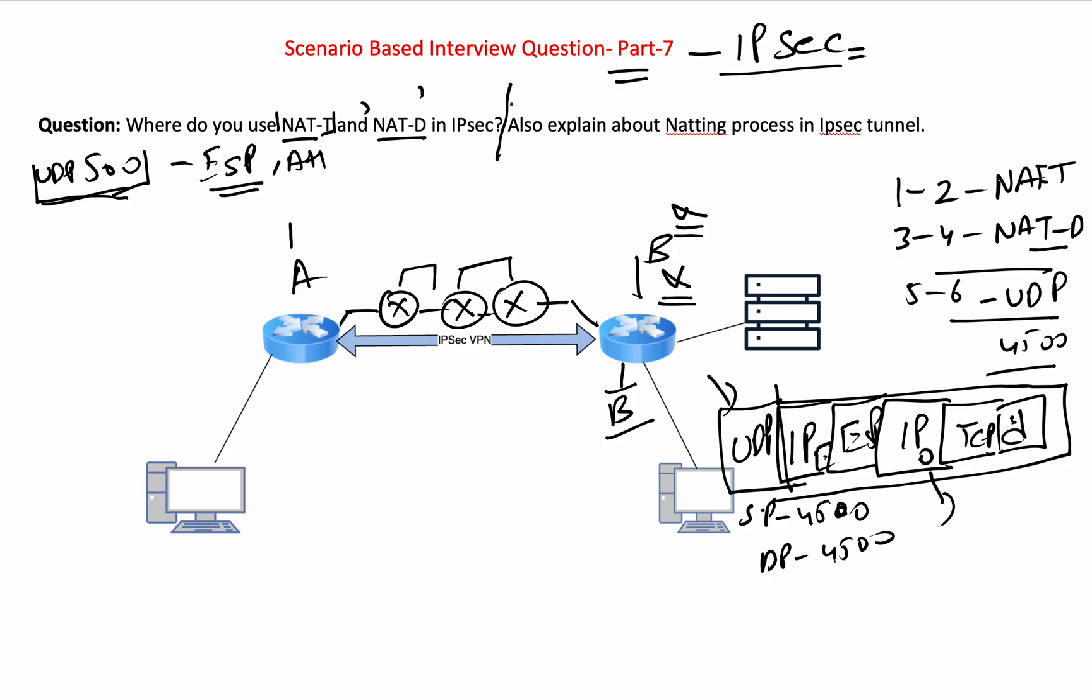Now what is NAT-D? NAT-D is basically a NAT discovery packet. And what is NAT discovery? NAT discovery will tell you in the third and fourth. This is main mode, by the way. In the third and fourth message, NAT-D is your third and fourth message. What it will do is it will send a hash value. It will send a packet with the hash value of source IP, source port, destination IP, destination port.